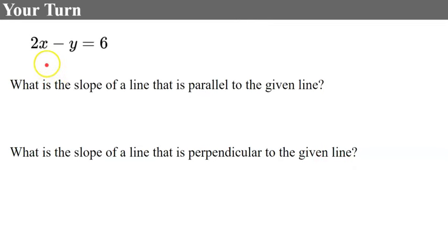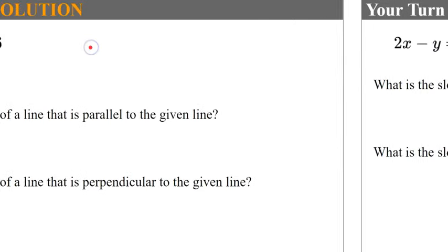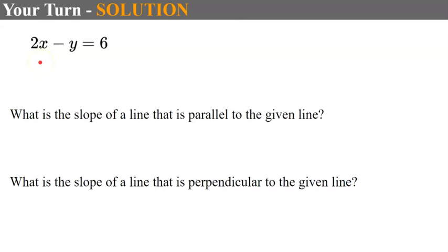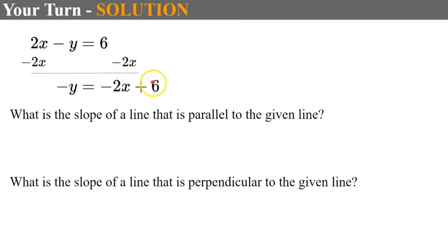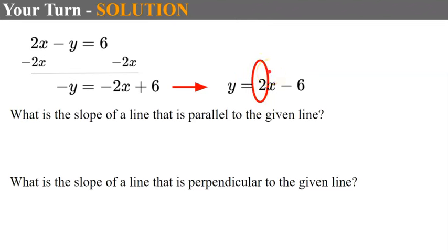Try another one. Given an equation, find the slope of a parallel line and a perpendicular line. First, write the equation in slope-intercept form by solving for y. Subtract 2x from each side to get negative y equals negative 2x plus 6, then multiply each term by negative 1, giving y equals 2x subtract 6. The slope is 2. Therefore, a parallel line also has slope 2, and a perpendicular line has slope negative 1 half. Check: 2 times negative 1 half equals negative 1.